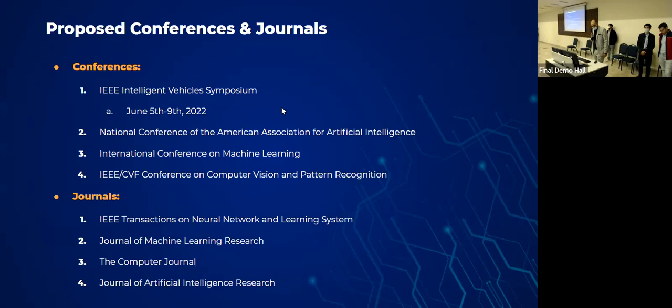As for the journals, we have also looked into some scientific peer-reviewed journals in the field of computer science. Here are some journals that we might consider: the IEEE Transactions on Neural Networks and Learning Systems, the Journal of Machine Learning Research, the Computer Journal, and Journal of Artificial Intelligence Research. Those journals have one publication monthly, and the Computer Journal has it weekly.